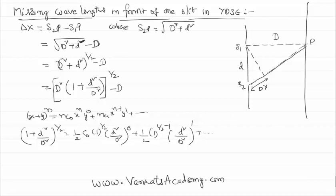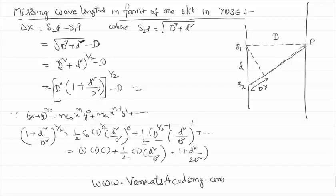Further terms are ignored because the next term would have small d to the power 4 in the numerator, which is very small. So we can ignore that. Using the binomial expansion, the result is 1 plus small d squared by 2 capital D squared. Substituting this value back, the square root of D squared is nothing but equal to D.